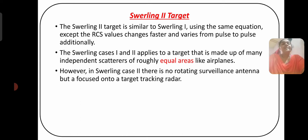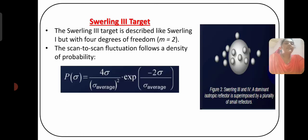Swerling Cases 1 and 2 apply to targets made up of many independent scatterers of roughly equal areas, like an airplane. However, in Swerling Case 2, there is no rotating surveillance antenna, but rather a focus on a target-tracking radar.